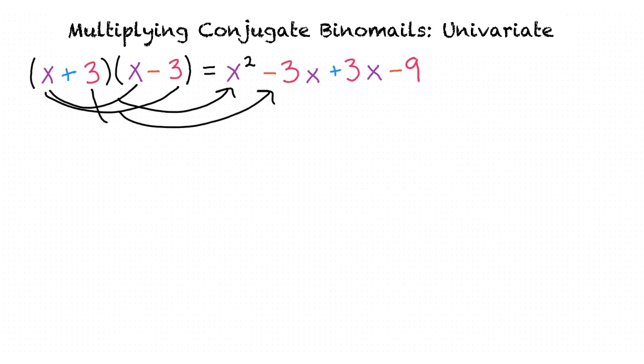When we multiply our inner terms, we would have 3 times x, which is plus 3x. And when we multiply our last terms, we would have 3 times minus 3, which gives us minus 9. That's the FOILing technique.